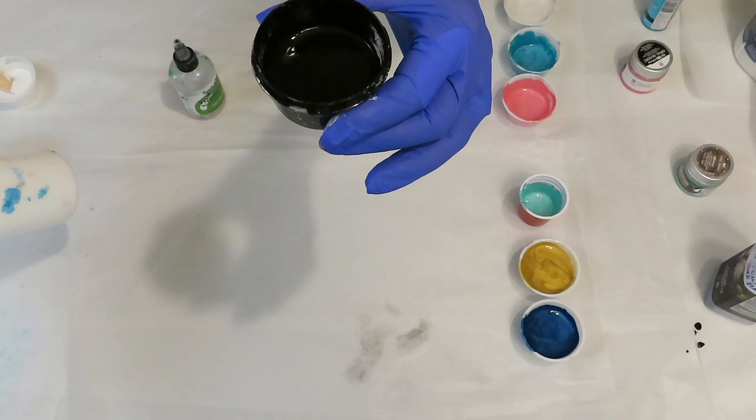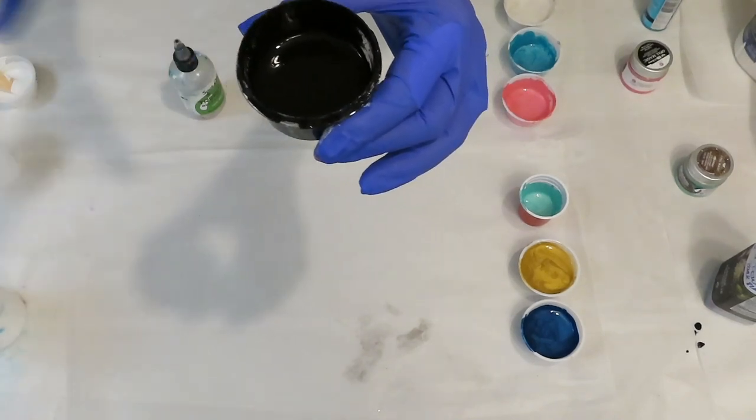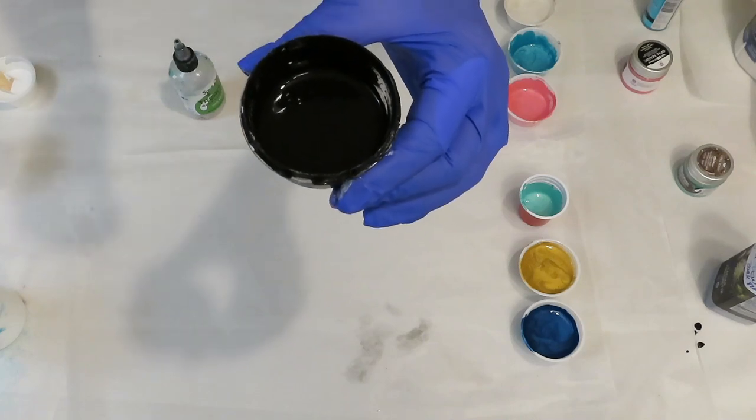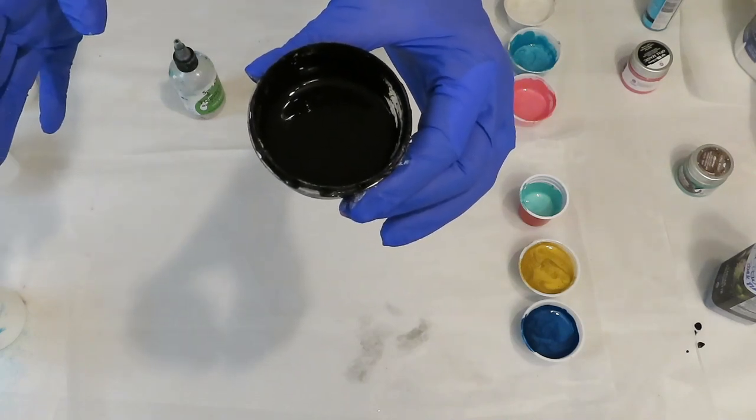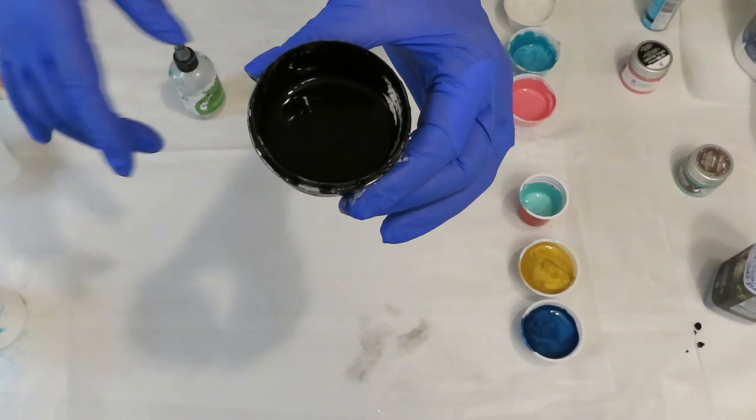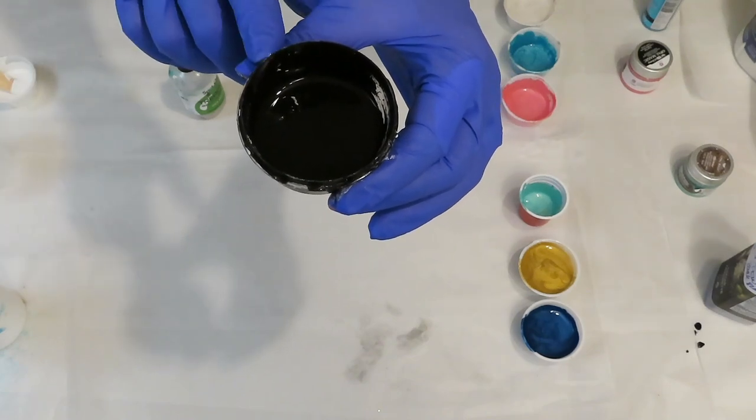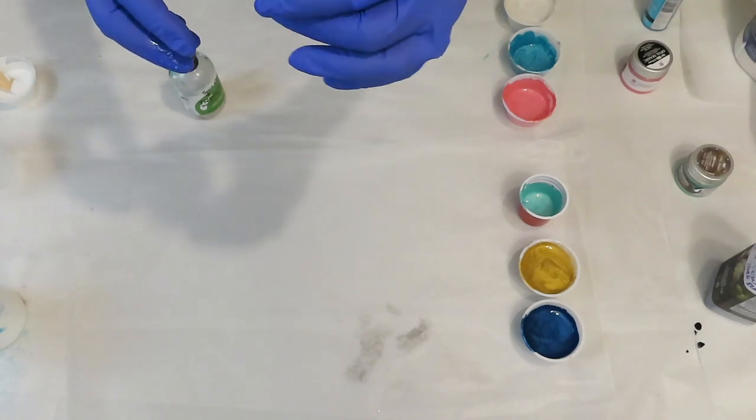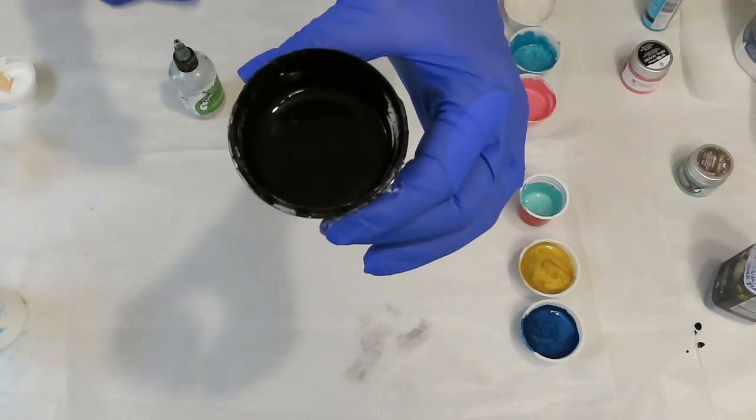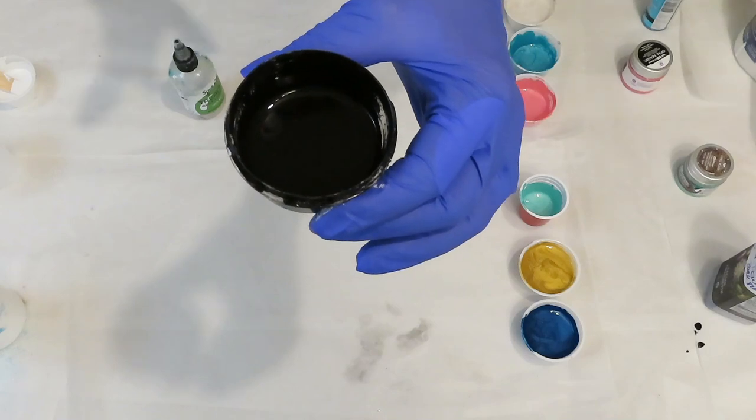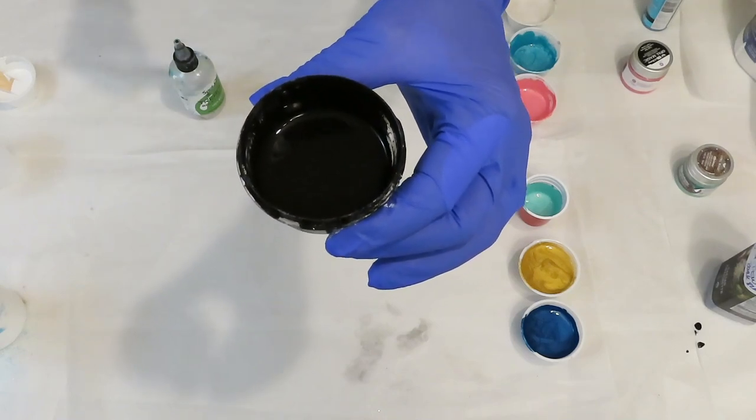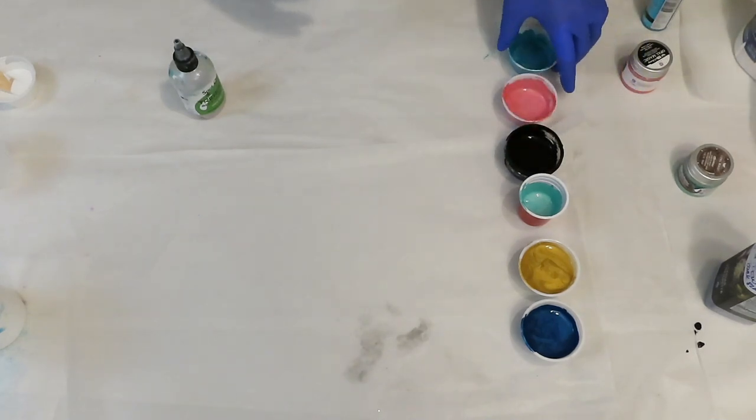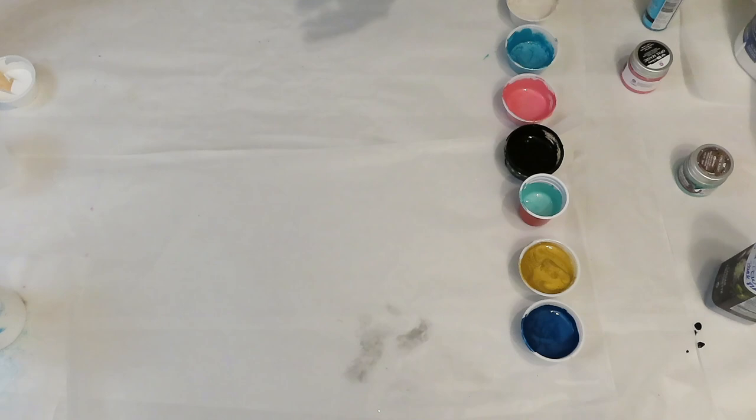I mixed it three to one with Amsterdam Black Oxide. So three parts Floetrol, the 50-50 combo, one part Amsterdam Black Oxide. It's a little bit thinner than the others, but all my paints leave a mound for about a second, maybe two seconds. But for a flip cup, you need your paints a little bit thicker.